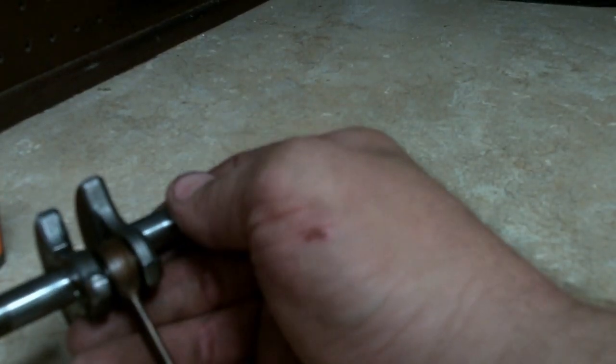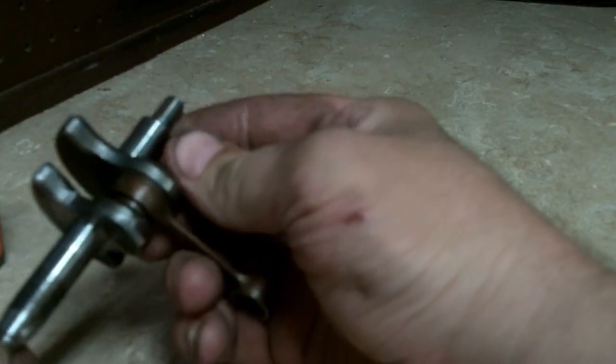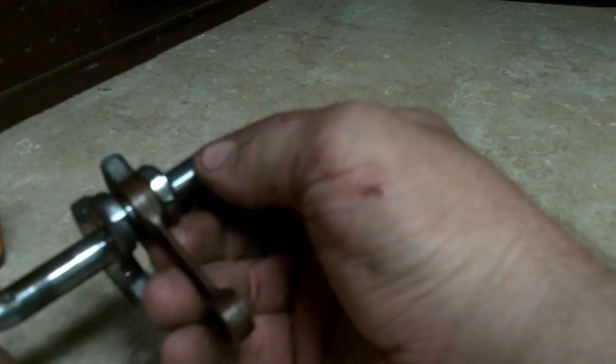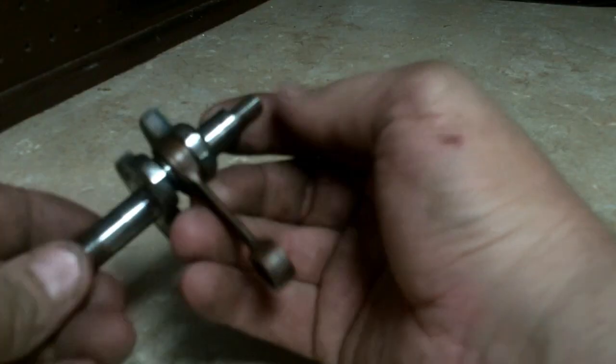Good afternoon, Mower Medic One. Today I want to show you a crankshaft that failed on a two-cycle engine. This was on an Echo CS345 chainsaw. Basically, this is the flywheel end and this is where the clutch would go.